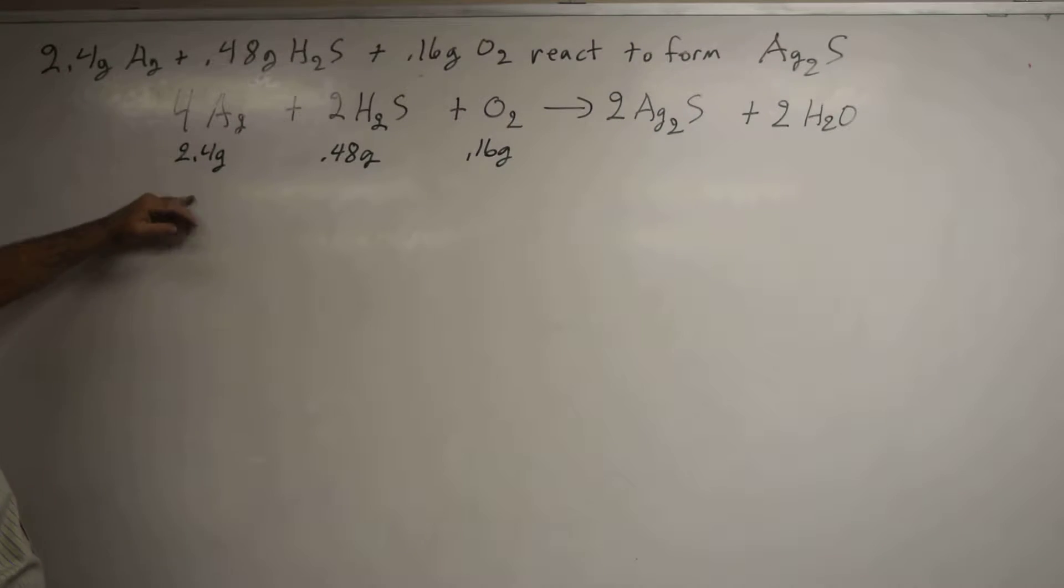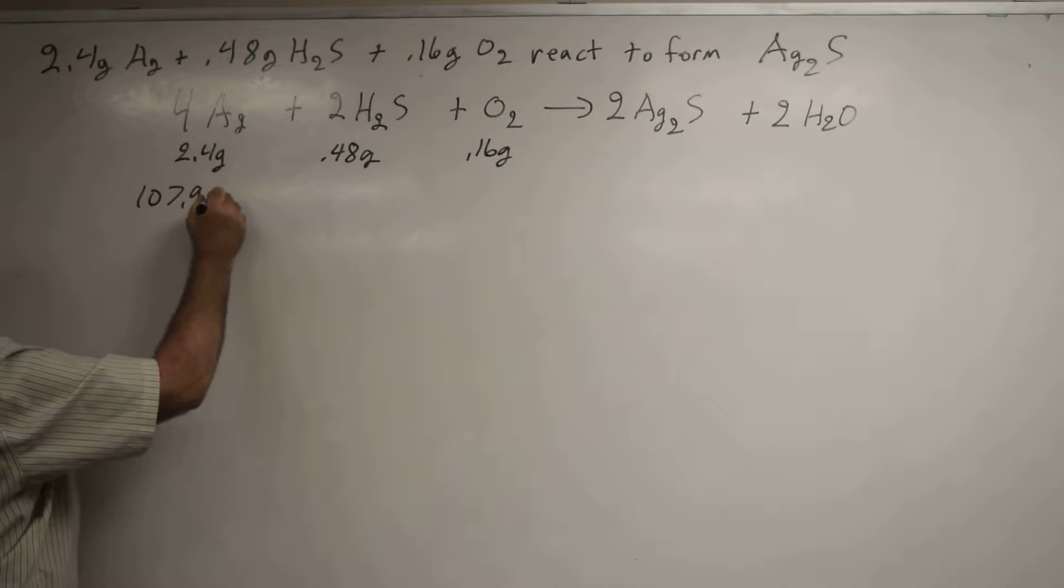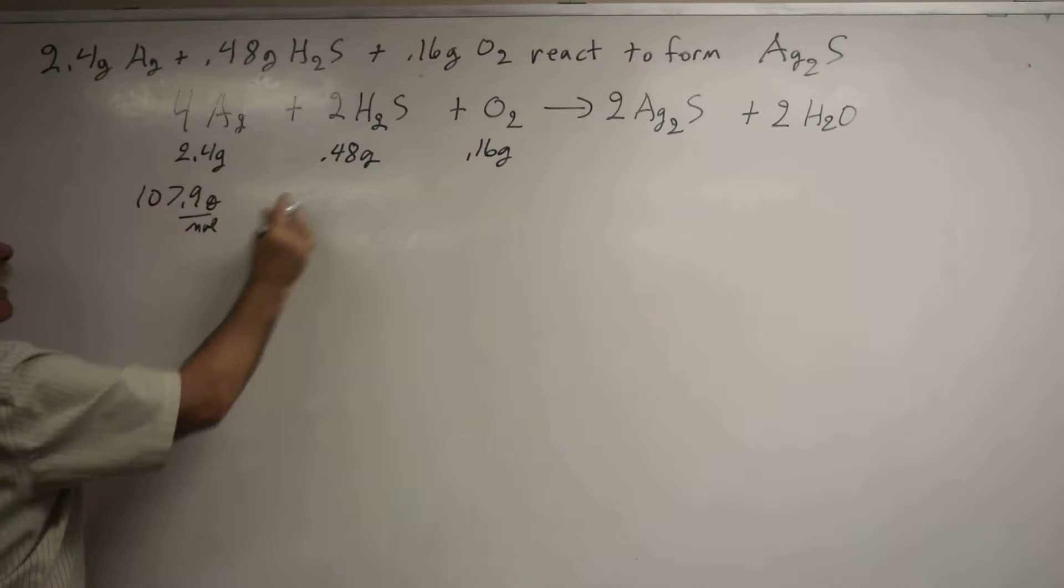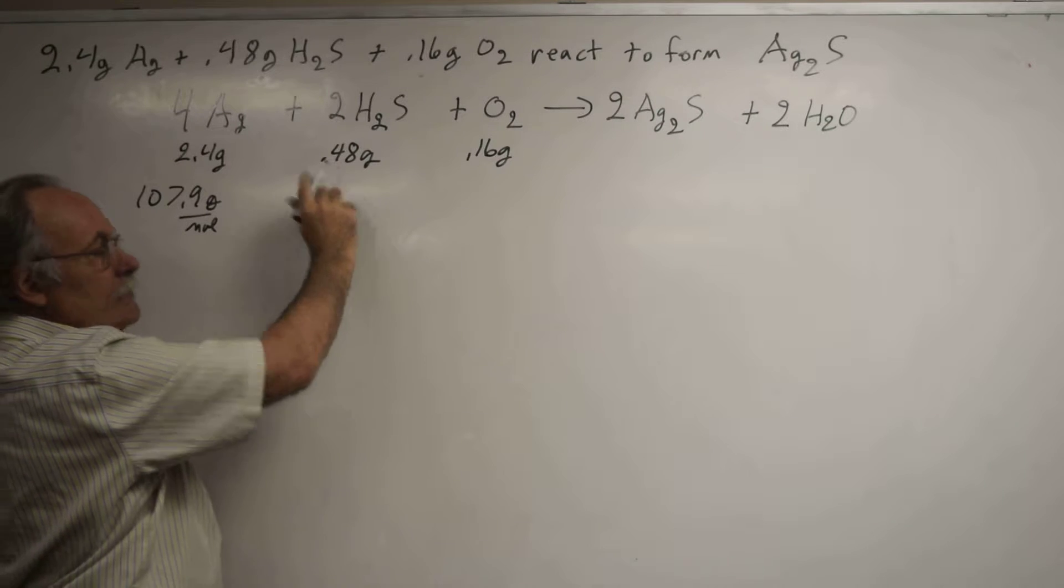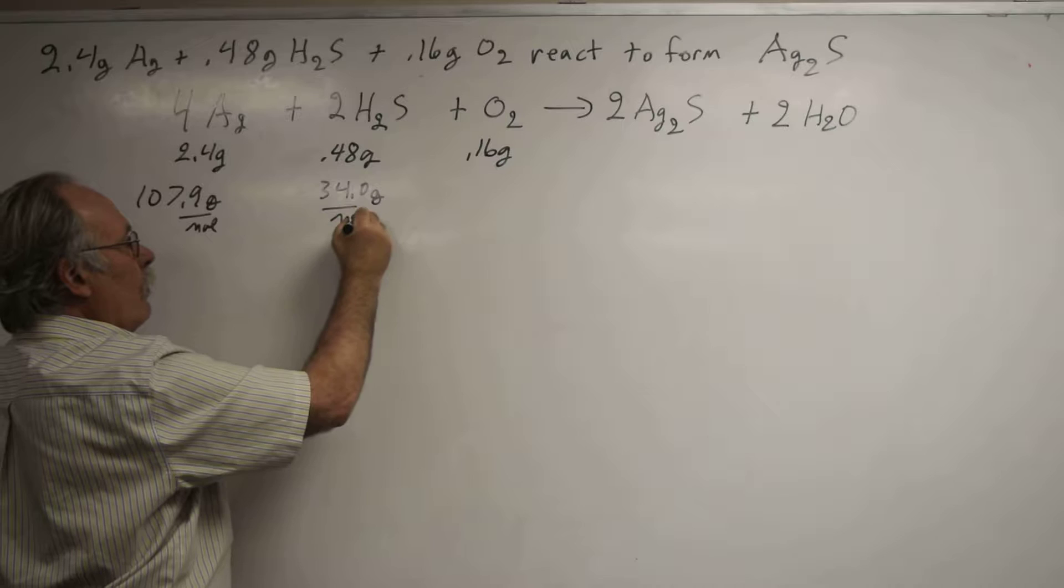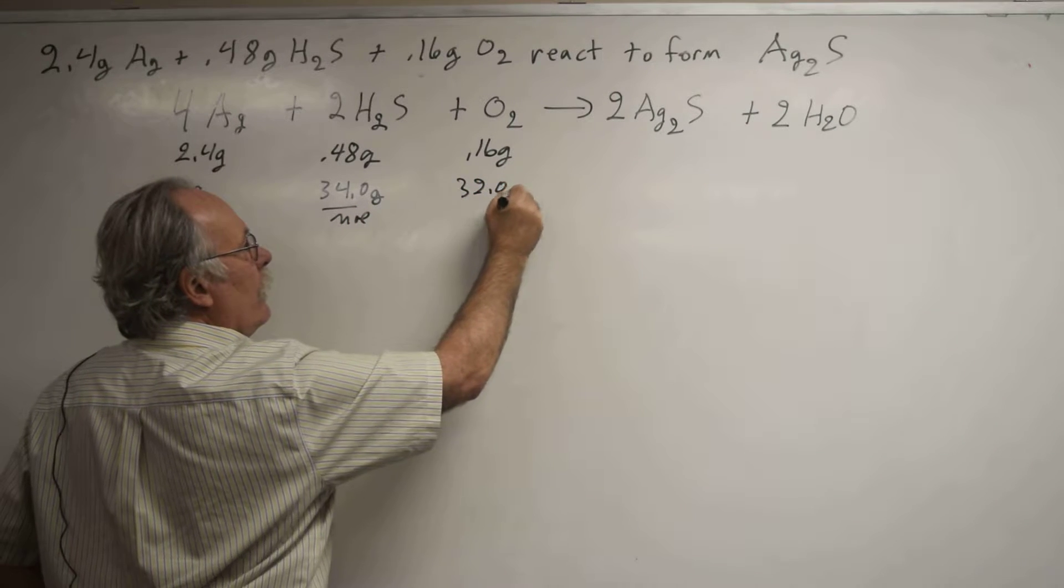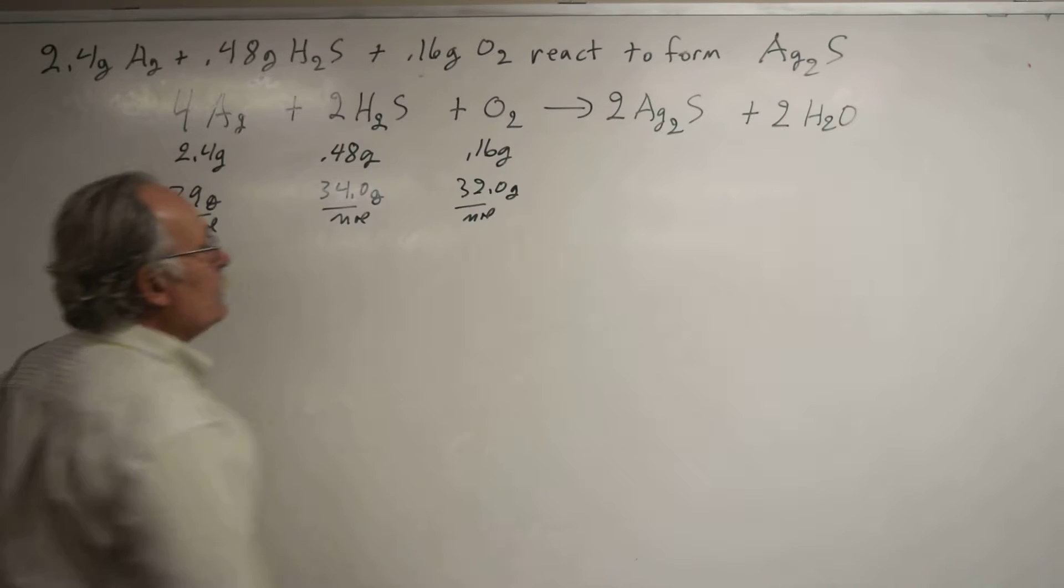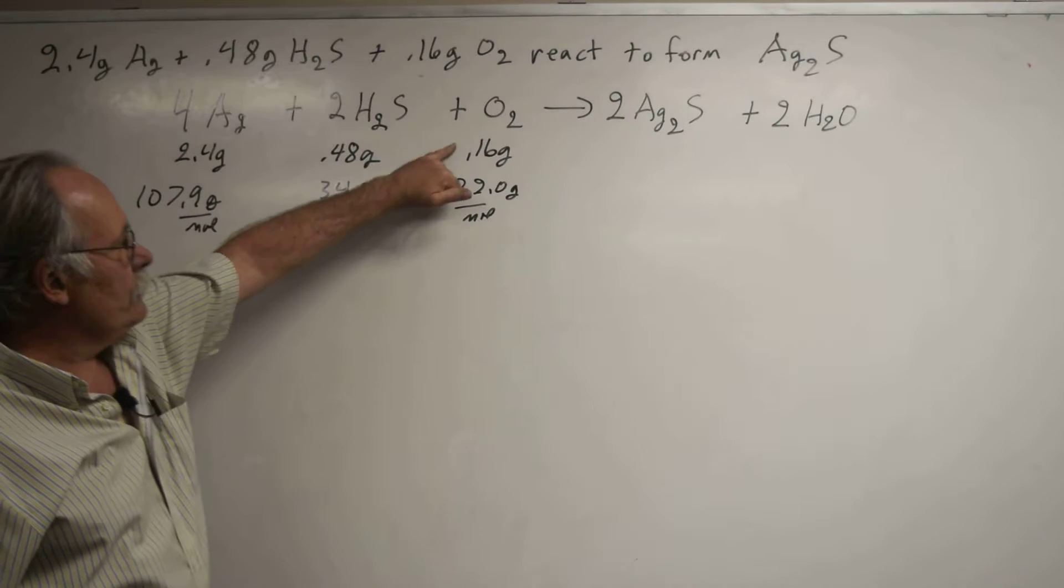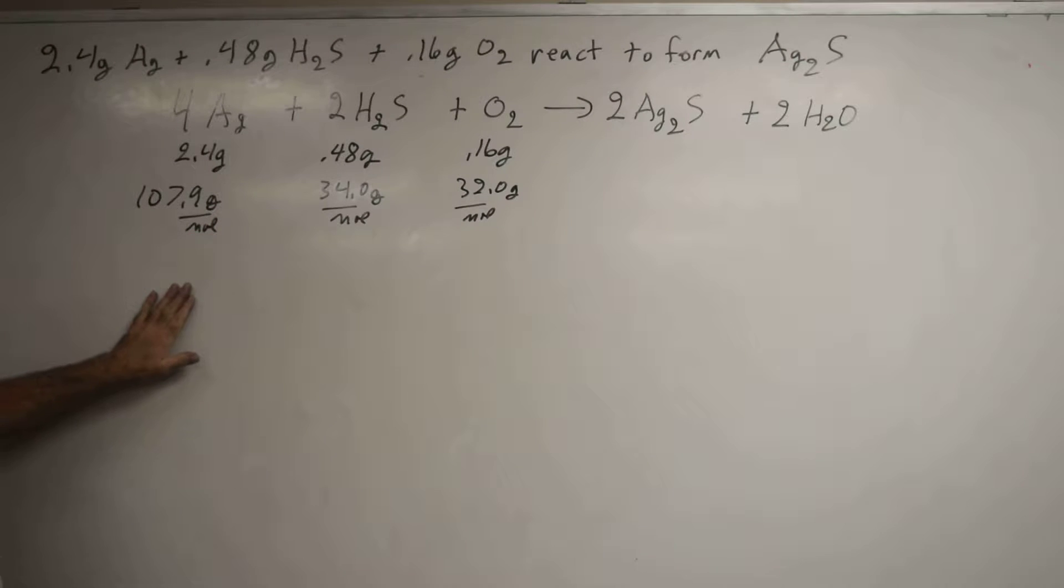To do this, we need to convert the mass of reactants to their moles, so I need the formula weights. The formula weight of silver is 107.9 grams per mole, H2S is 34.0 grams per mole, and O2 is 32.0 grams per mole. Since these given numbers have two sig figs, I took my molar masses to three or more sig figs.